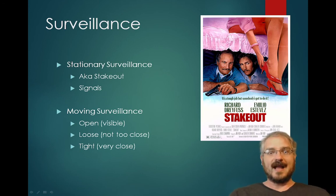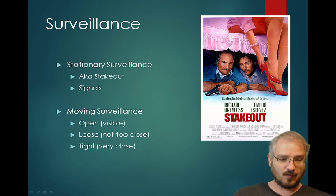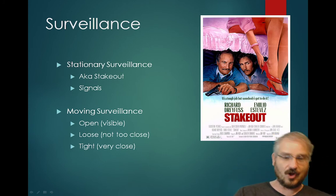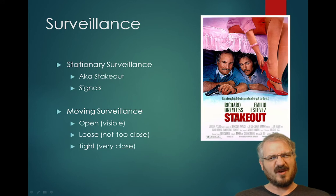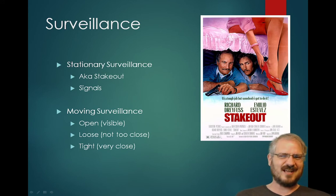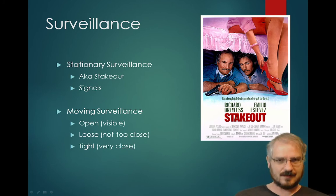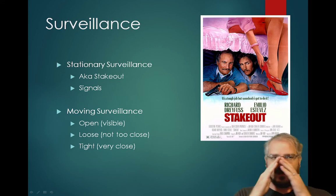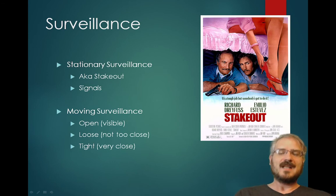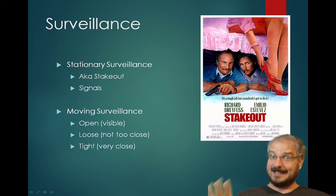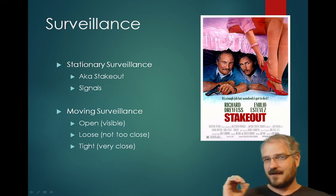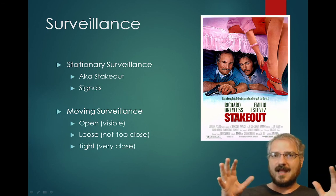Moving surveillance involves following a subject. There are three types: open surveillance, where the subject knows they're being watched — used for mob bosses who expect it; loose surveillance, where staying hidden is prioritized even if the subject might get away; and tight surveillance, which is riskier in terms of being noticed but makes it much harder for the subject to escape.